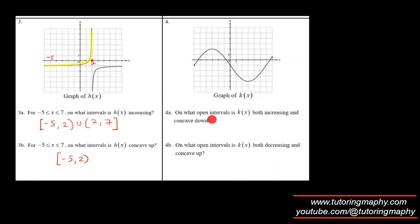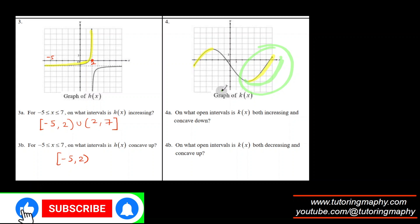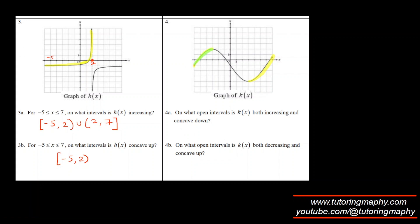Now, on what interval is k both increasing and concave down? First, mark the increasing interval — the function is climbing up to a point, then decreasing, then climbing again. Concave up is a smiling face; concave down is a frowning face. The region that is both increasing and concave down runs from negative 6 to negative 3.